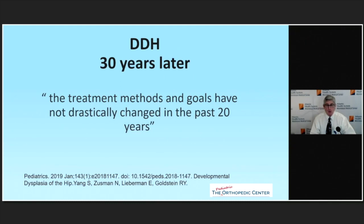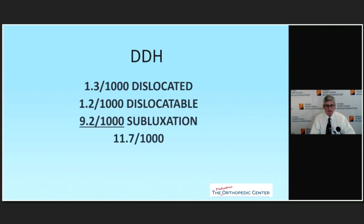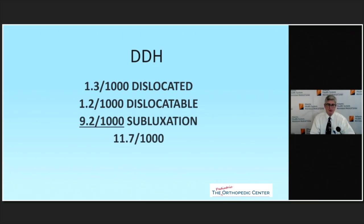Now we have a lot of reasoning for why we do what we do. What is dislocation of the hip? There are really three types: developmental dysplasia of the hip, which is my charge today; neuromuscular; and teratogenic, which we won't be speaking about today. The incidence still hasn't changed much — the dislocated hip is about one in a thousand births, the dislocatable hip is also about one in a thousand births, and then there's a subluxable hip, which has to do with relaxing hormones and estrogen.